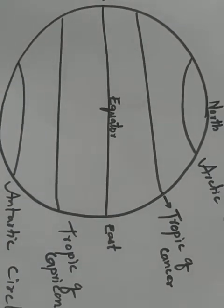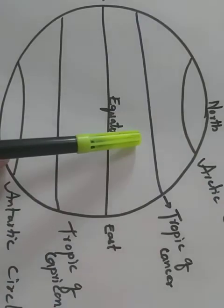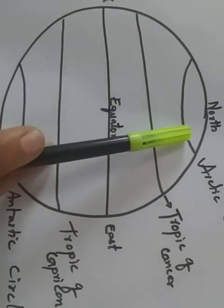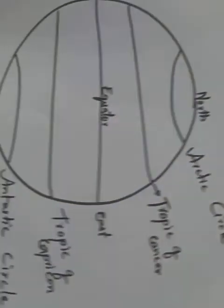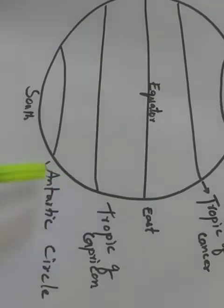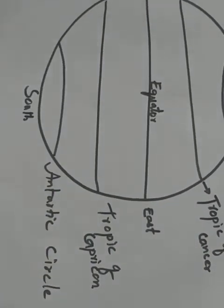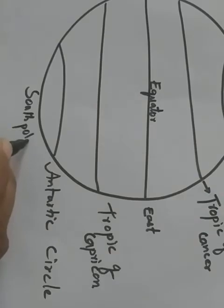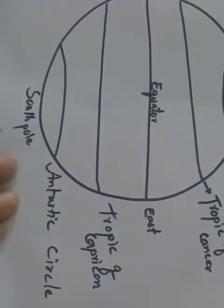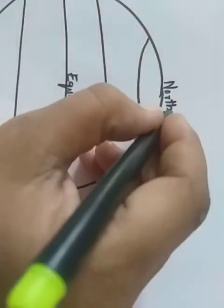Why? This equator only divides the half of the globe, north. This is north pole. This is south pole. These are the important latitudes of the Earth: Equator, Tropic of Cancer, Arctic Circle. This is Tropic of Capricorn. This is Antarctic Circle. This is South Pole. This is North Pole.